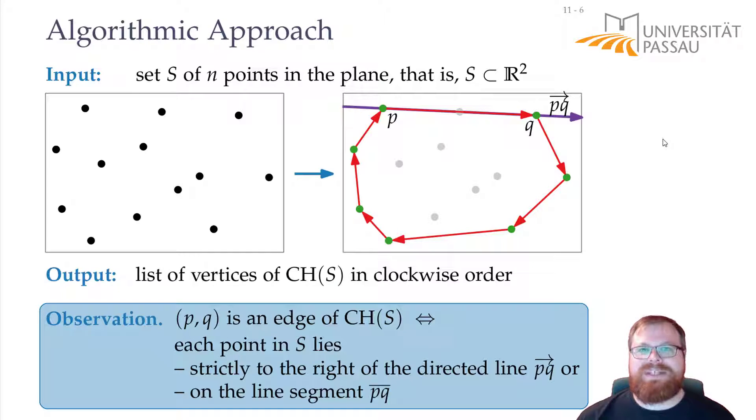This observation now gives us a nice way to find out which segments build the convex hull. We only have to take every pair of input points and check this property. Do all the other points lie either on this line or to the right of it? And if yes, then this is an edge of the convex hull. And with this, we can build our algorithm.